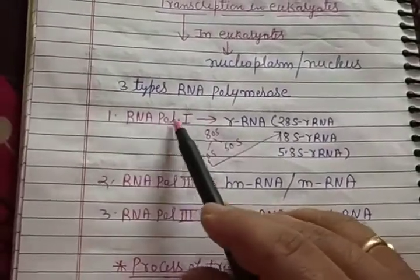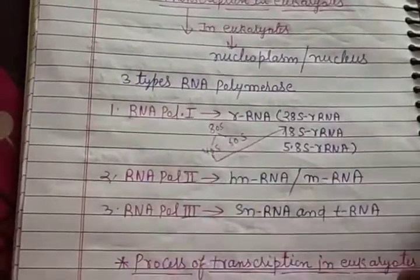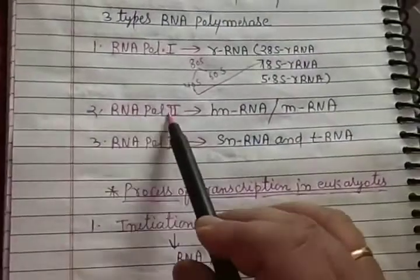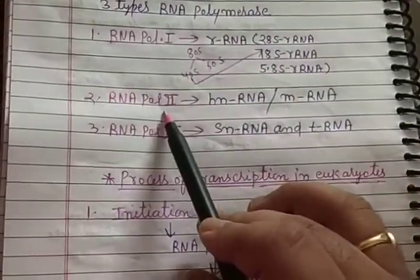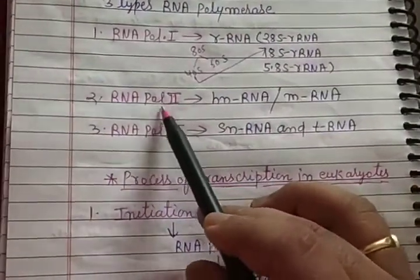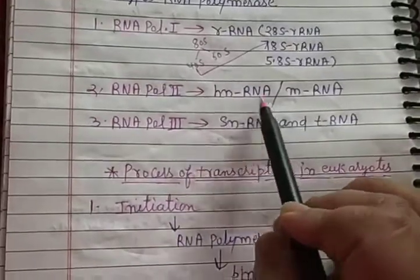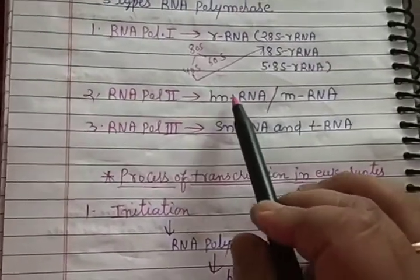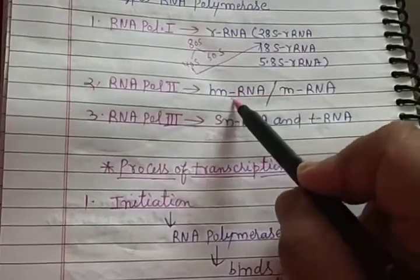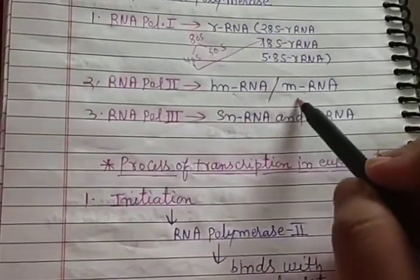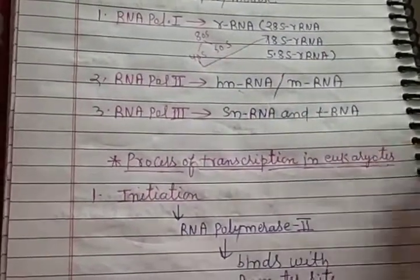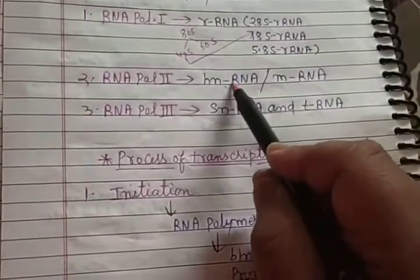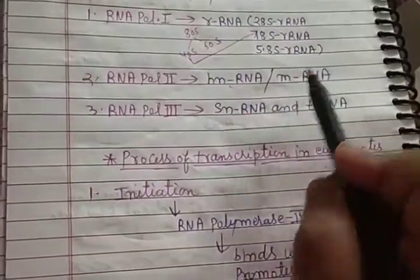RNA polymerase II provides help to form HnRNA — heterogeneous nuclear RNA. This HnRNA subsequently converts into mRNA, which will be explained shortly.